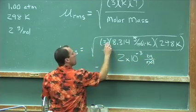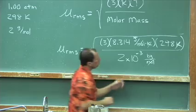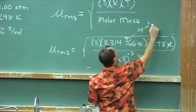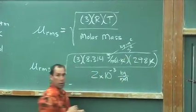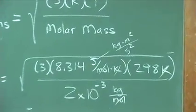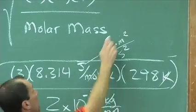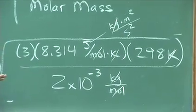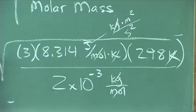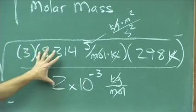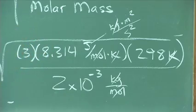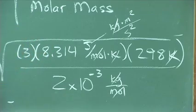Let's see, the kelvins will cancel. A joule is a kilogram meter squared over second squared, a unit of energy you might remember from a high school science class. The kilograms will cancel, leaving us with the units of meters squared over second squared. Everything's going to be okay because we're going to take the square root of the number and the units, and it'll leave us with meters per second, which is good for a speed or a velocity.